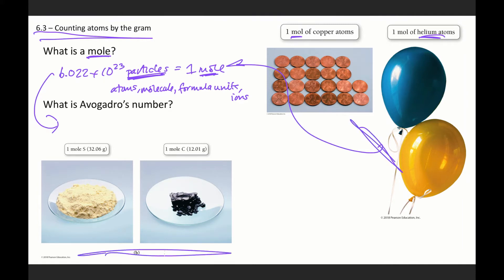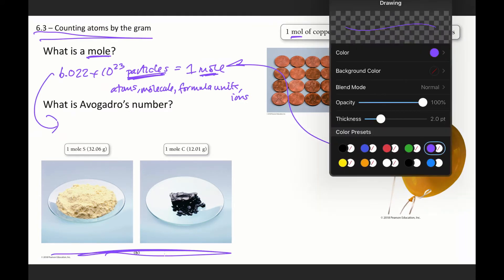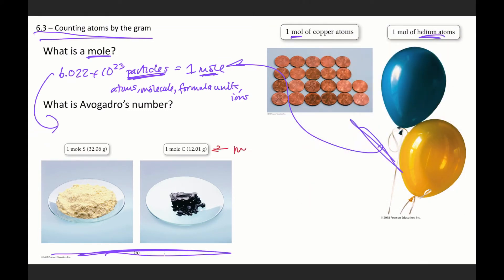Likewise here, it's a sample of sulfur and a sample of carbon. And we're using grams to measure them out. And one mole of each, again, different amount of space, different mass, different properties. So then that brings us to how do we get to this gram value here? And that's going to go back to our molar mass, which I didn't put on this page for some reason. But thankfully, there's space for it. So molar mass.